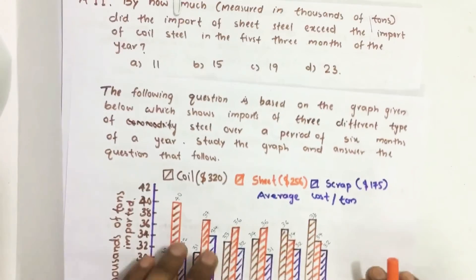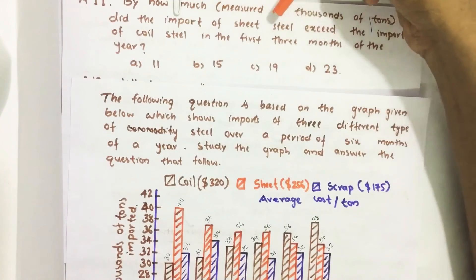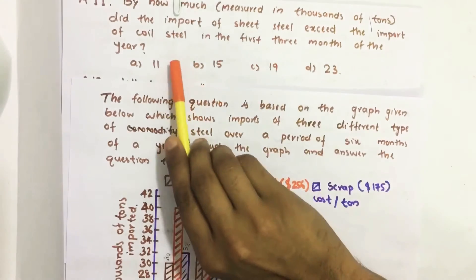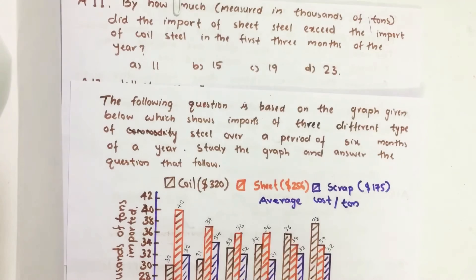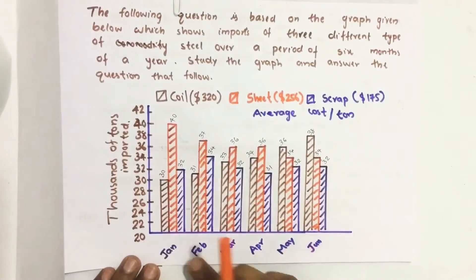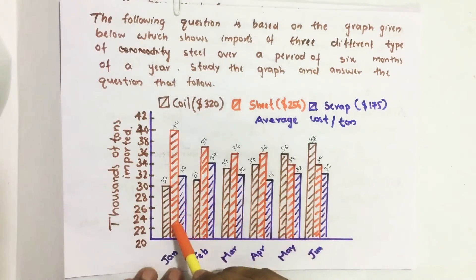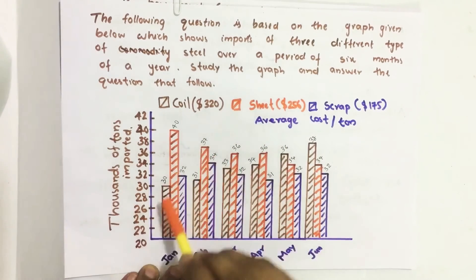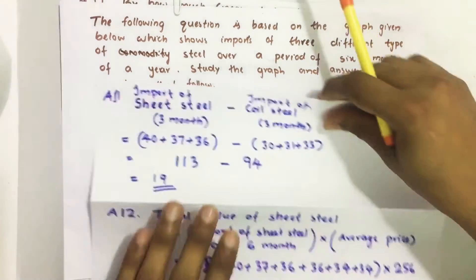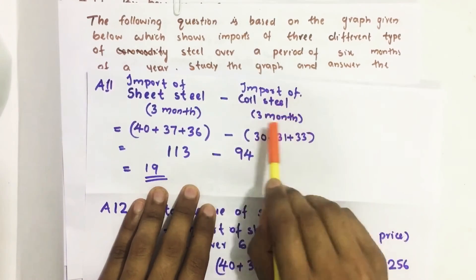The first question: by how much did the import of sheet steel exceed the import of coil steel in the first three months of the year — January, February, and March? We need to find how much the sheet steel import, indicated in orange, exceeded the coil steel. We calculate: import of sheet steel for the first three months minus import of coil steel for the first three months.